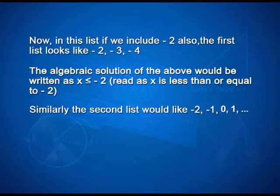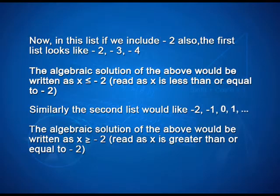Similarly, the second list would be -2, -1, 0, 1, and so on. The algebraic expression of this would be written as x ≥ -2. Let us represent this on the number line now.